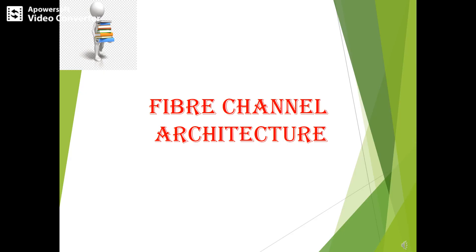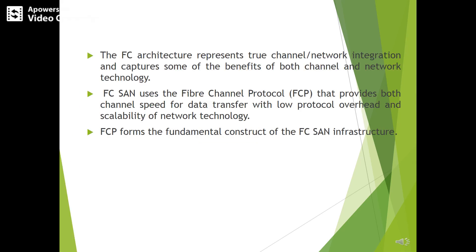In the present session I'll cover fiber channel architecture. The FC architecture represents true channel or network integration and captures some of the benefits of both channel as well as network technology. FC SAN uses the fiber channel protocol, that is FCP, that provides both channel speed for data transfer with low protocol overhead and scalability of network technology.